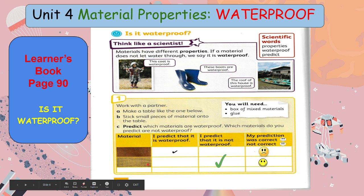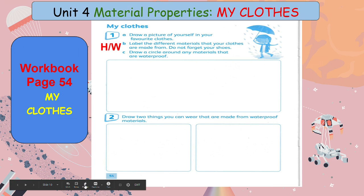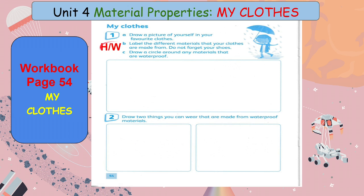I found out that the fabric was not waterproof because the water just went straight through it. In your workbook page 54, 'My Clothes' — for number 1, this will be your homework. Draw a picture of yourself in your favorite clothes and label the different materials that your clothes are made from. Do not forget your shoes. For letter C, draw a circle around any materials that are waterproof.